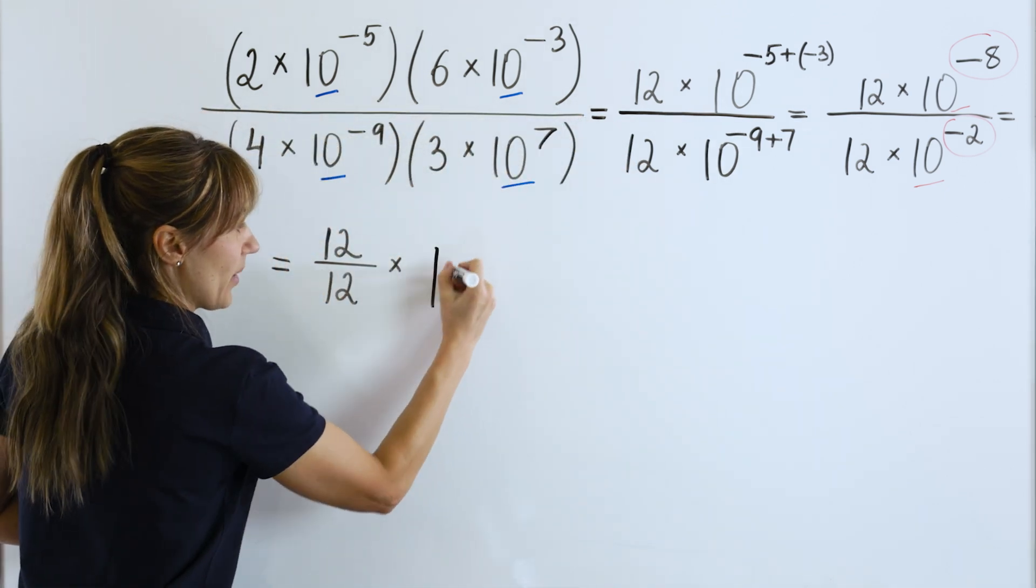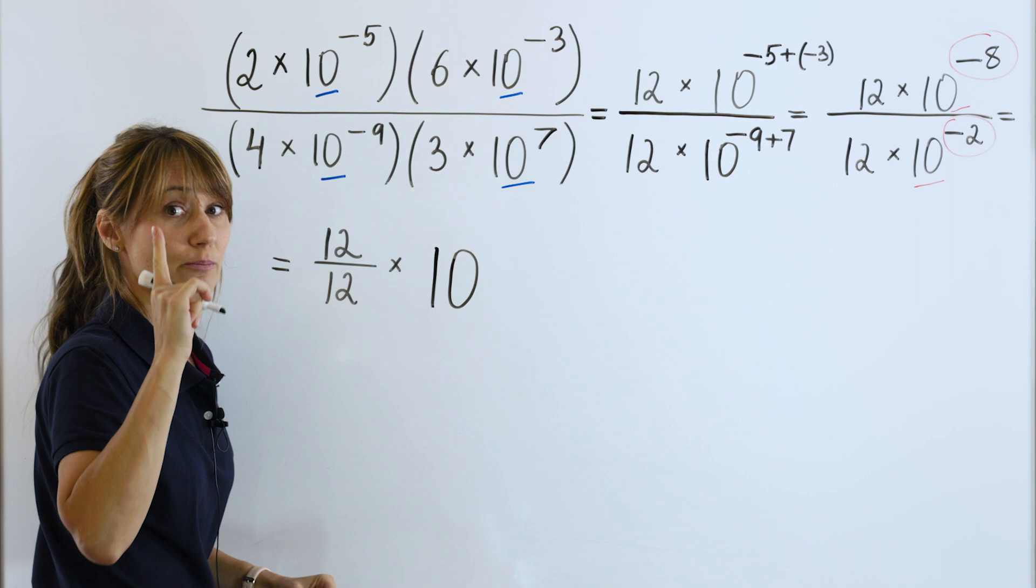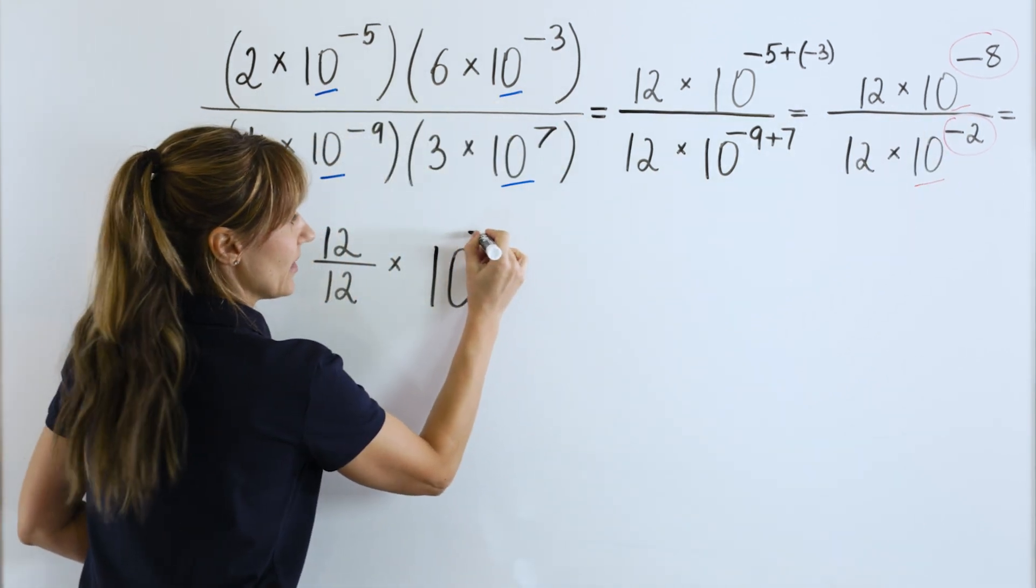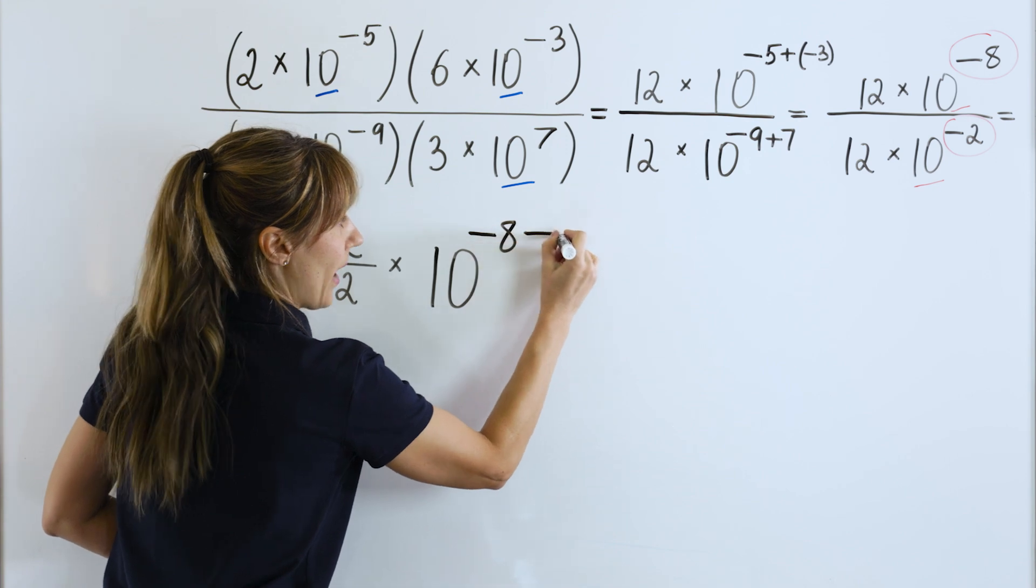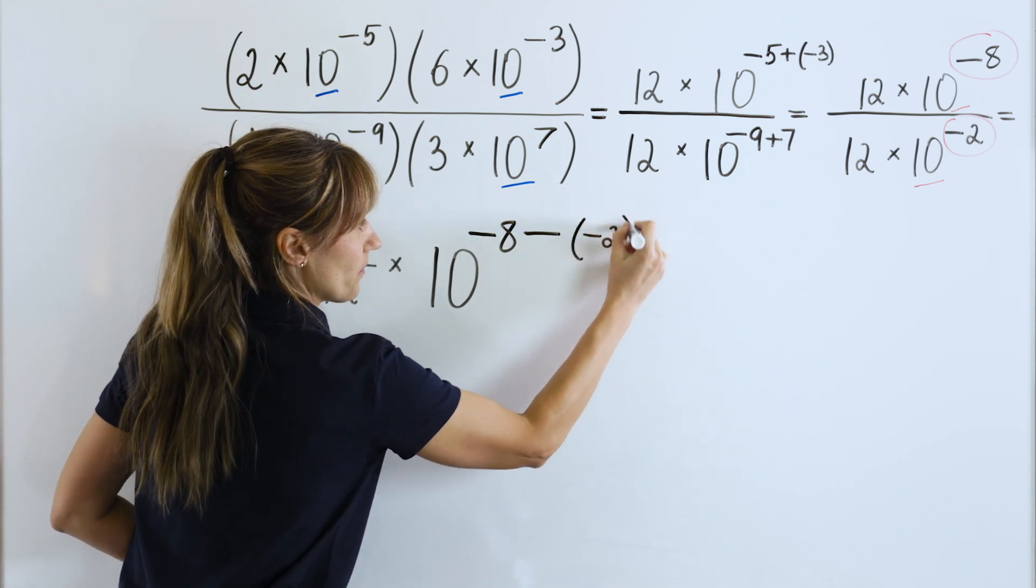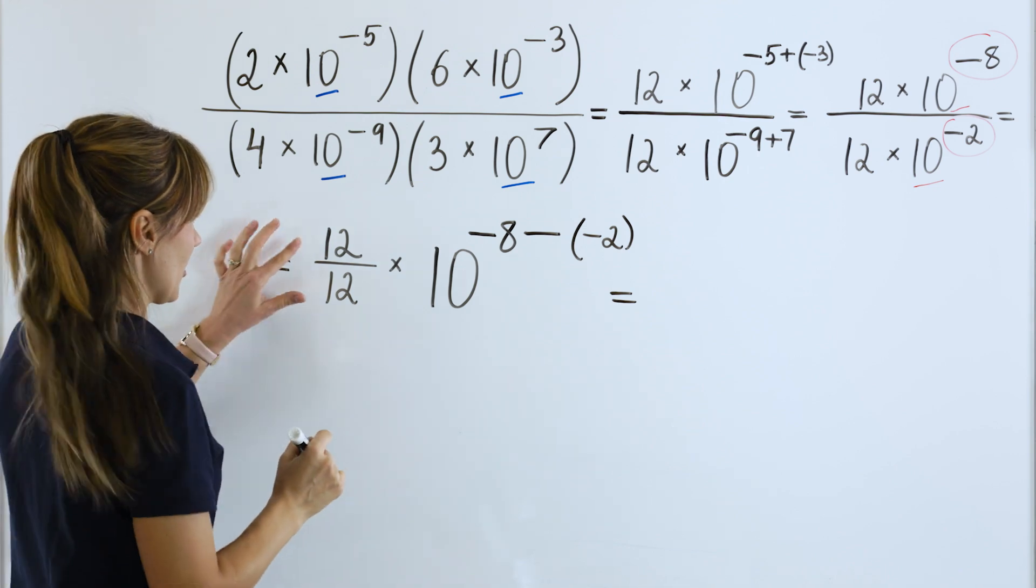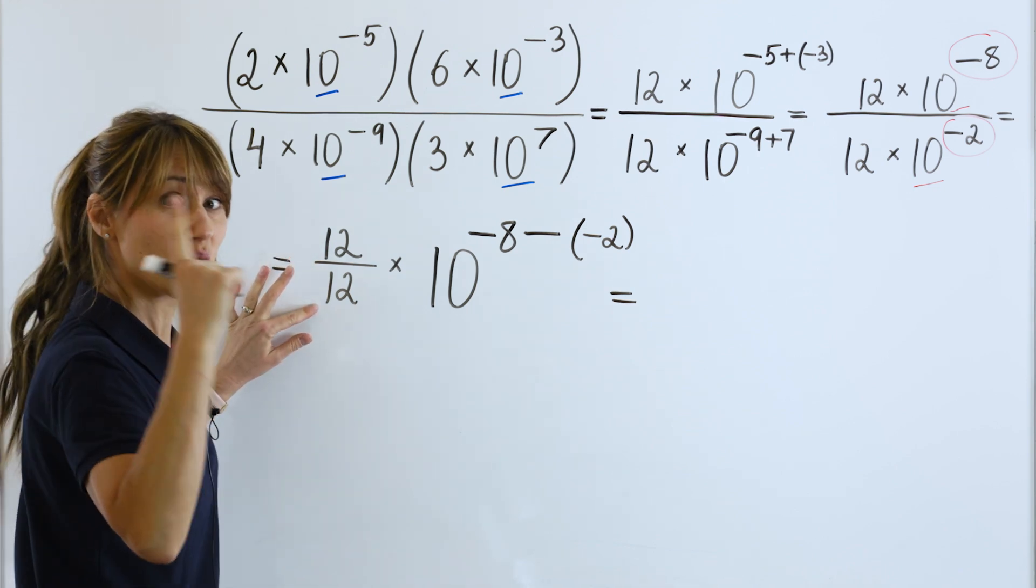So, keep the same base 10 and subtract the exponents because you are dividing. You will have negative 8 minus negative 2. Be careful here with the signs. Let's work on it. So, 12 divided by 12 is 1.